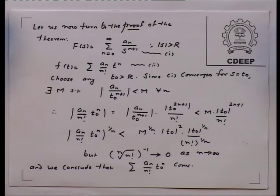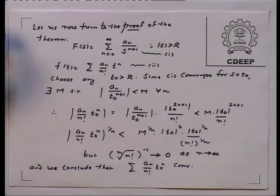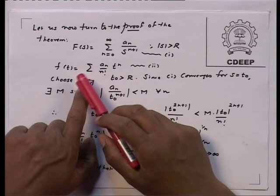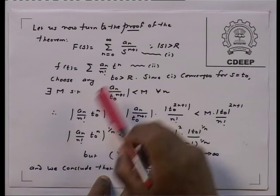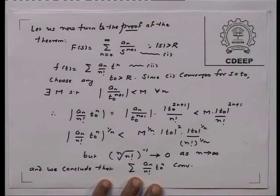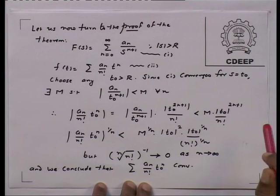What is given to you? F of s equals the sum from n equals 0 to infinity of a_n upon s to the power n plus 1, which converges for mod s bigger than r. This information is given to you. What are you cooking up? f of t equals the sum of a_n upon n factorial times t to the power n. What you have to show is that the Laplace transform of this f(t) is F(s), and the first thing to show is whether this series converges and if so where.